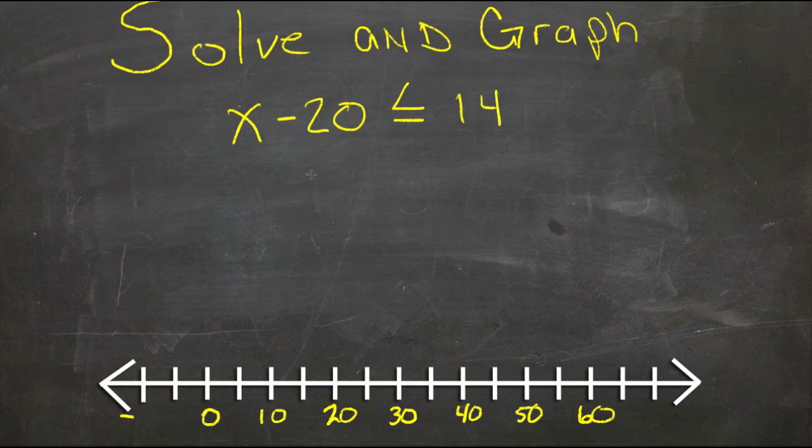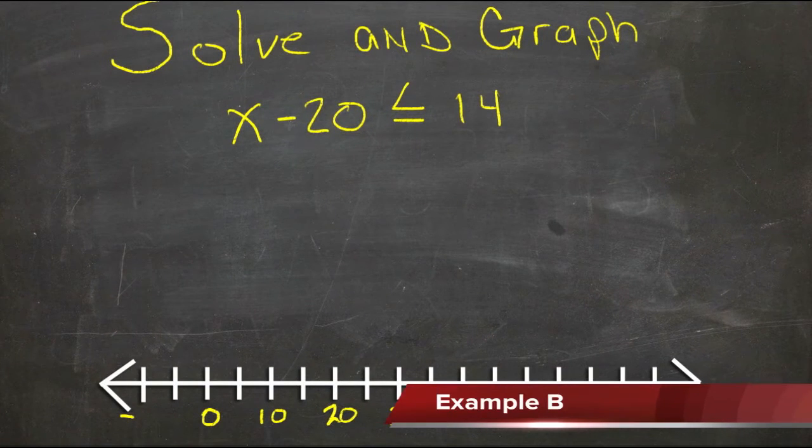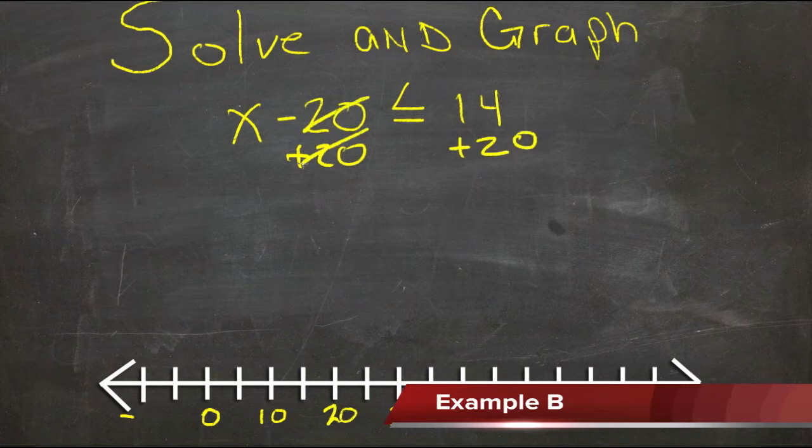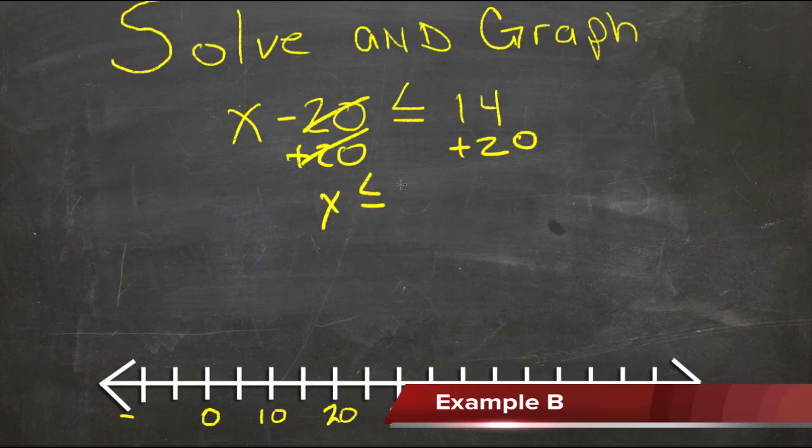In this second example, we have basically the same step. So we'll just add 20 to both sides here to get rid of this negative 20. We'll add 20 over here. These will cancel. We'll have x on the left hand side as less than or equal to 34.